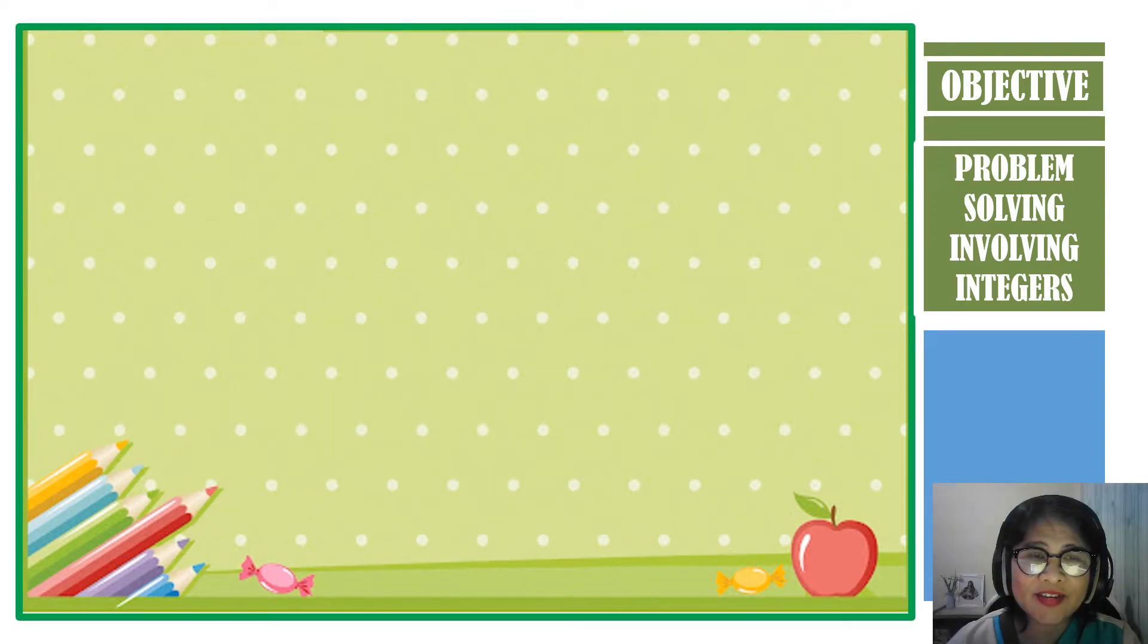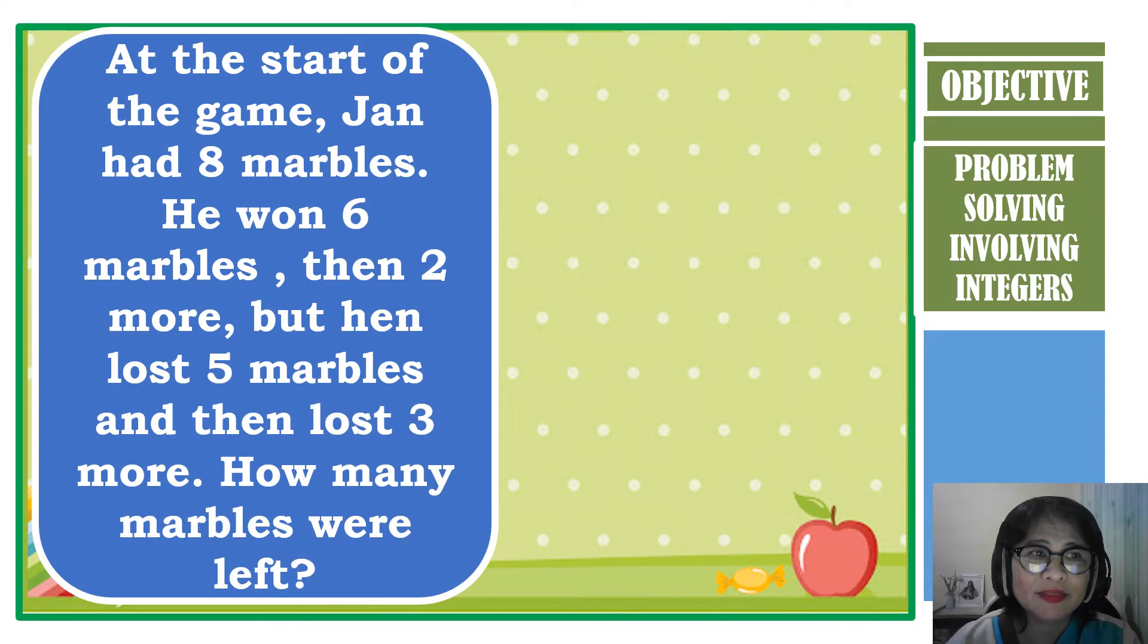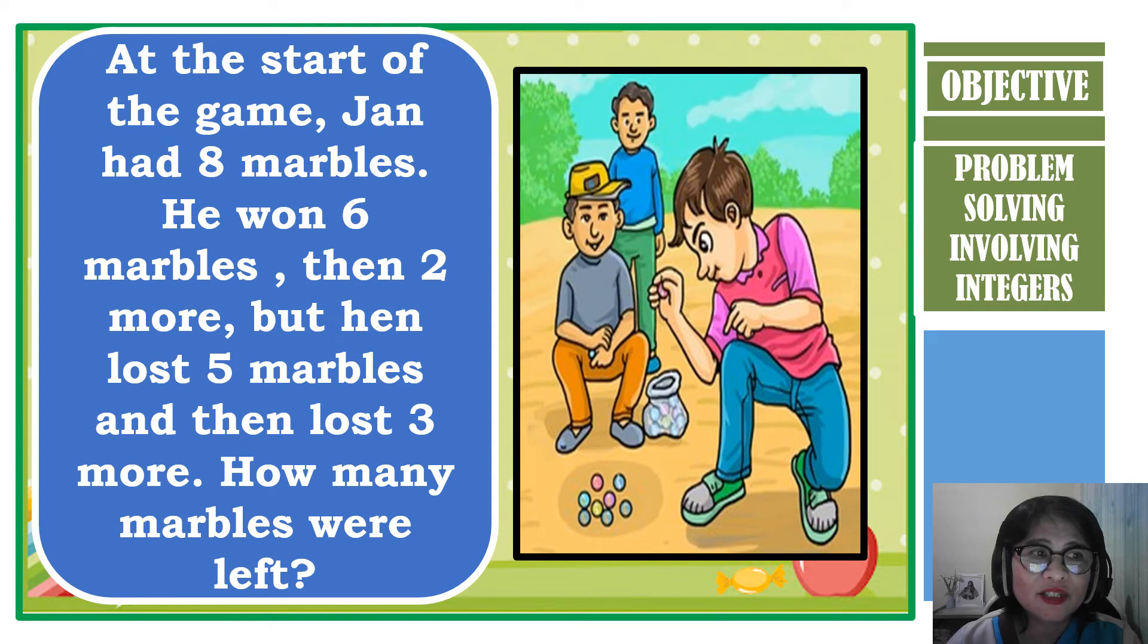Let's have another example. At the start of the game, John had 8 marbles. He won 6 marbles, then 2 more. But then he lost 5 marbles, and then lost 3 more. How many marbles were left?